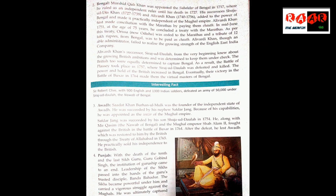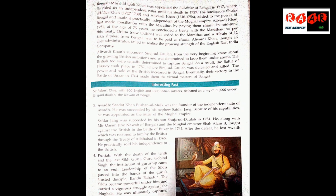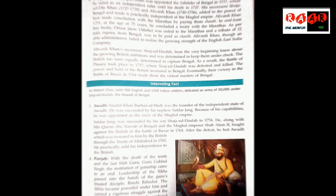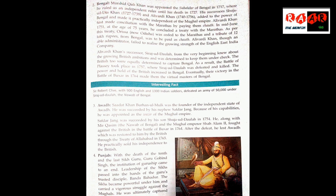Number 2: Bengal. Murshid Quli Khan was appointed as the Subahdar of Bengal in 1717, where he ruled as an independent ruler until his death in 1727. As Subahdar, he controlled the whole area and ruled independently, managing Bengal's revenues and administration.